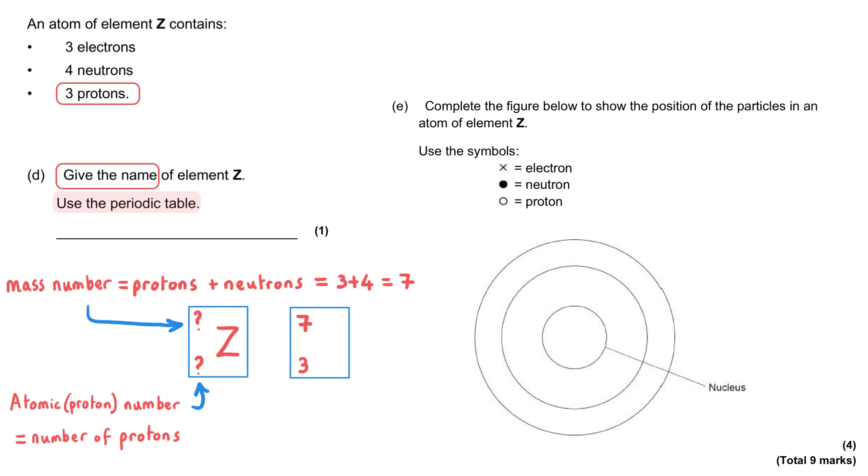Which means it will have an atomic number of three. And it's actually the atomic number which gives an element its identity, because all of the atoms of a particular element will have the same number of protons. So to unlock this question, we need to look in the periodic table for the element with an atomic number of three.